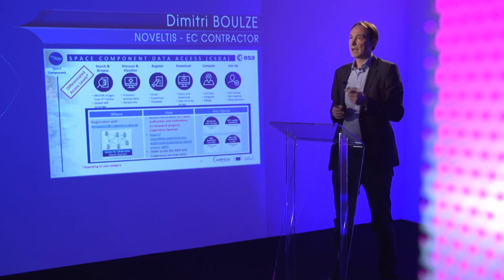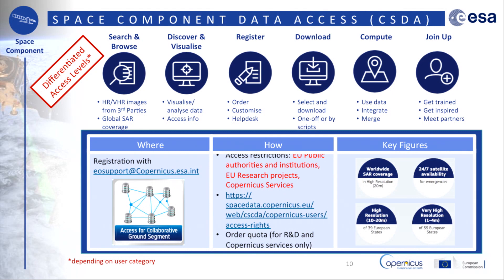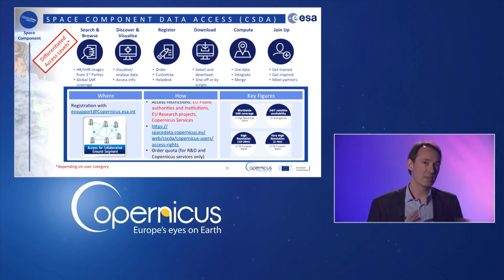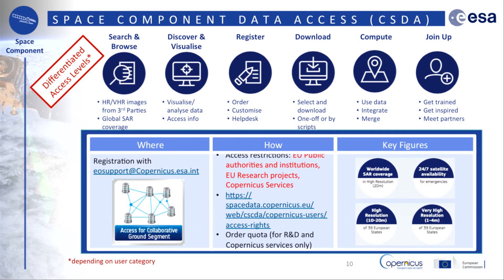The second access point managed by ESA is the Space Component Data Access. It provides high-resolution and very high-resolution images of the 39 European states together with a worldwide radar coverage in high resolution. This space component relies on a constellation of dedicated satellite missions — first the Sentinel — as well as on a set of Earth observation space missions not dedicated to Copernicus but contributing to it, enabling a harmonised data provision to the Copernicus users. The Copernicus users eligible to access data from those contributing missions include the six Copernicus services, institutions and bodies of the European Union, participants in research projects financed under the European Union research programs, the general public, public authorities, international organizations and NGOs. Each user category has specific access rights to the datasets.